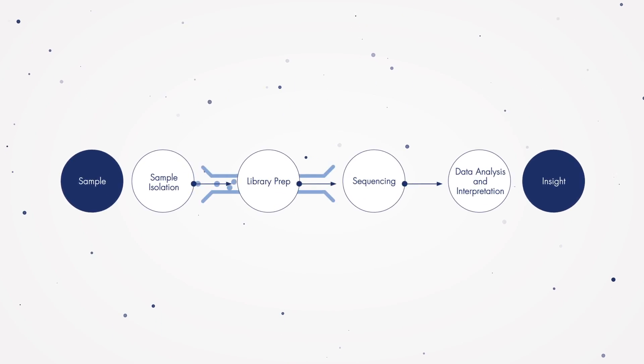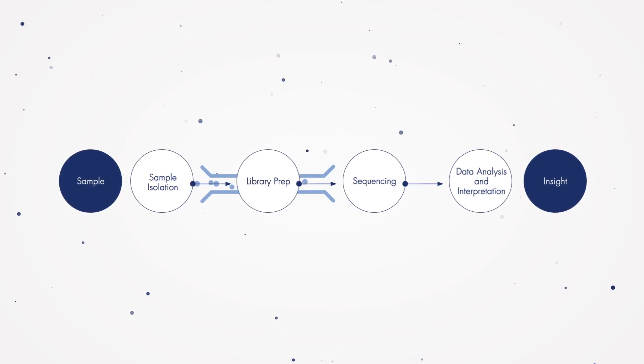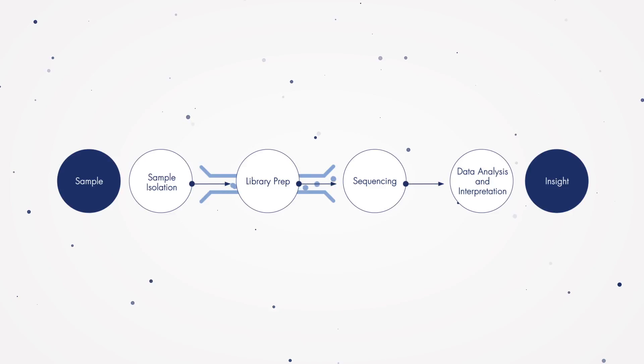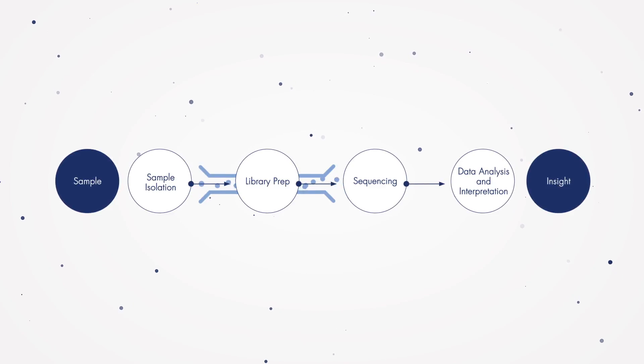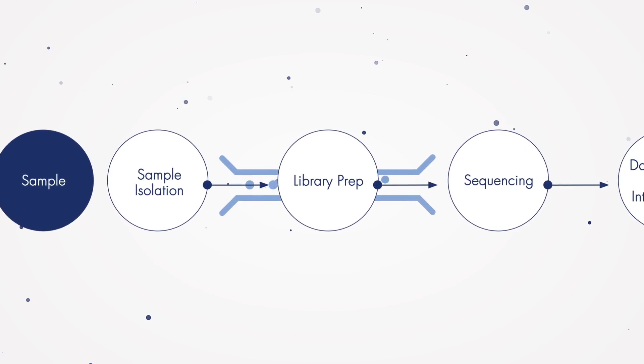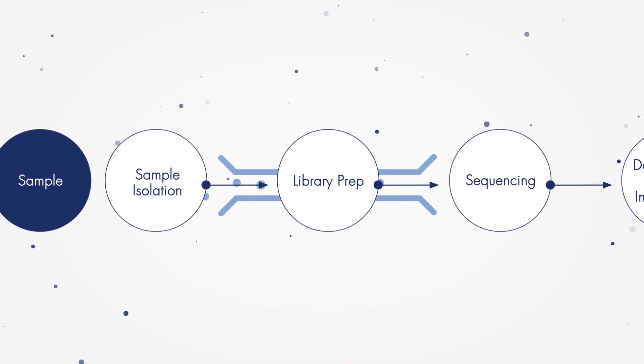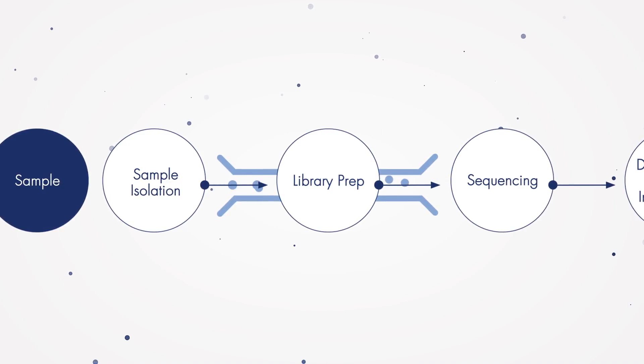One potential bottleneck in NGS, whether you're doing whole genome sequencing, whole exome sequencing, or custom hybrid capture, is library preparation, a sometimes tedious but central step towards successful sequencing.